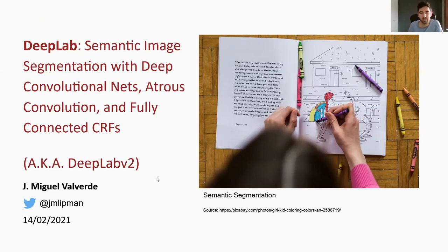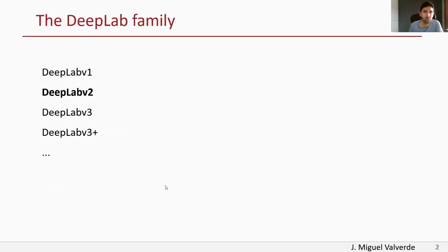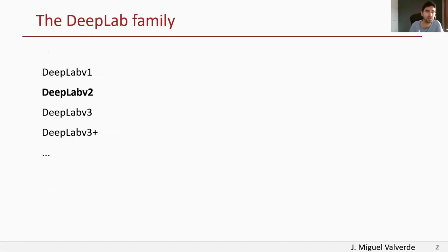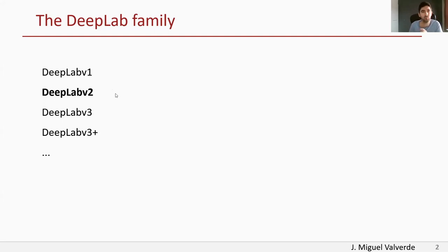The method introduced in this paper is also known as DeepLabV2. DeepLabV2 is a family of architectures. The first one was presented at a conference, and the second one contains the key components to understand all the different architectures of DeepLab. DeepLabV3 is just a bit more incremental, and V3+ even more so, but once you understand DeepLabV2, you can easily read the other papers. That's why we decided to present this paper.